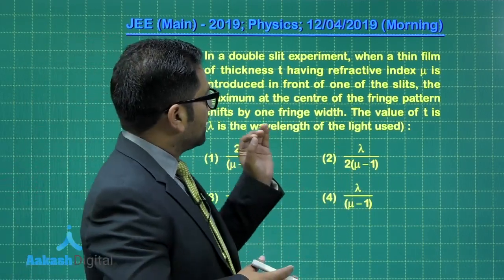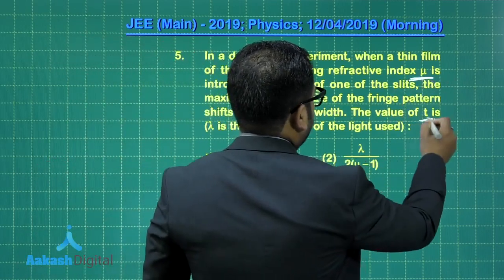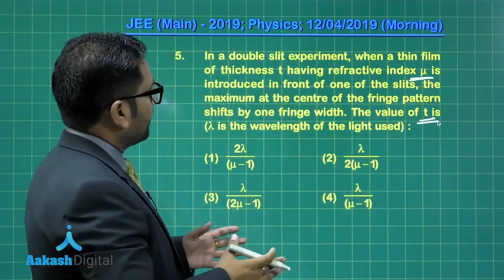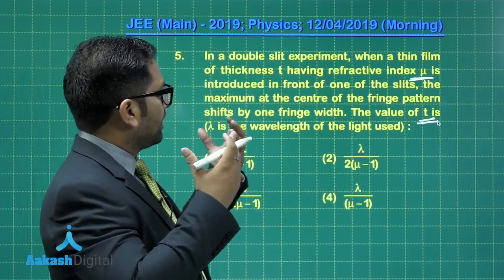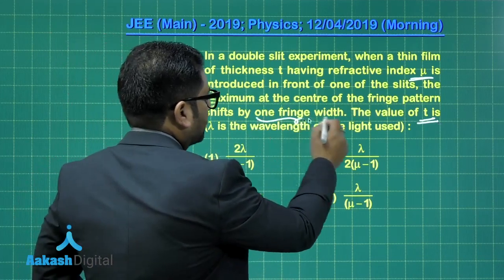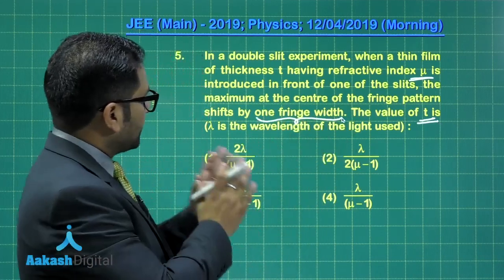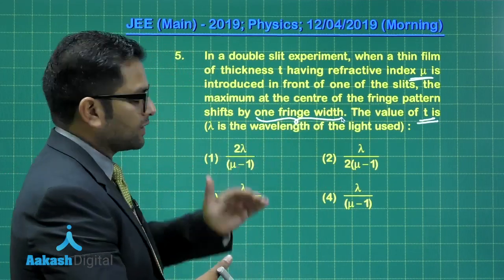So, the slab has refractive index mu, the thickness of the slab is t, and upon placement of the slab, the central fringe shifts by one fringe width. That's the data. And we need to calculate the value of thickness t in terms of all these things.